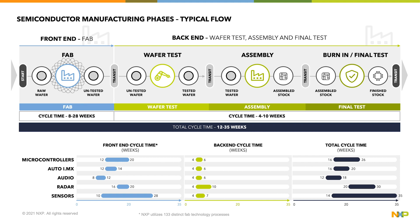First there is fab, the longest and most complex of the processing steps, ranging from 8 to 28 weeks in length. The back-end part of the process is typically quicker, but has potentially more factories and transits involved in the completion of the semiconductor chips. The back-end cycle time can range from 4 to 10 weeks.